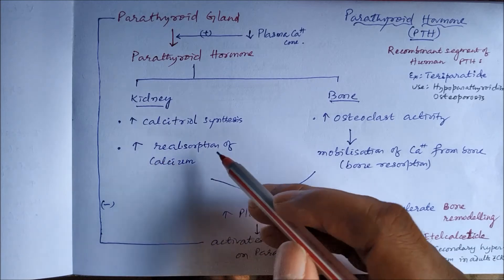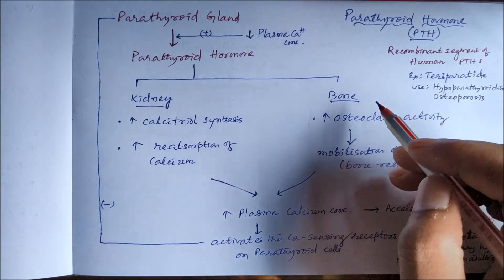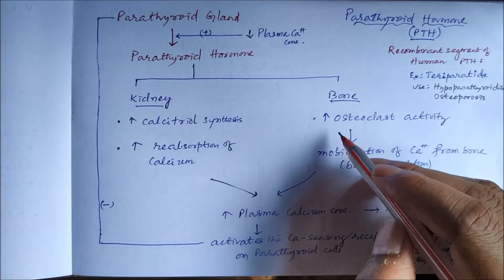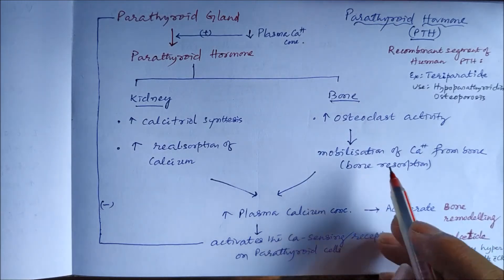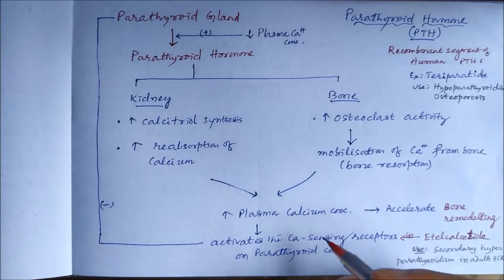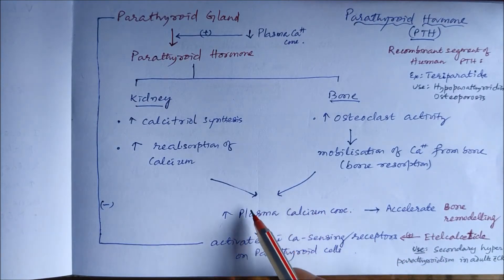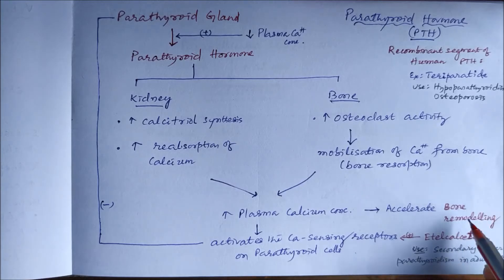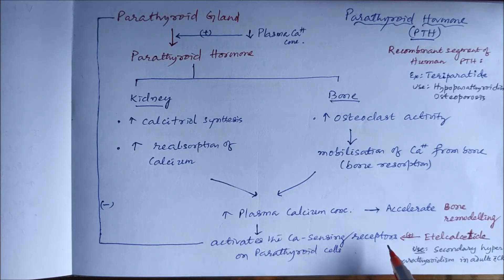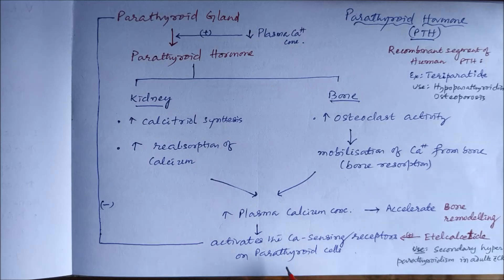In bone, parathyroid hormone, like vitamin D, increases osteoclast activity. This mobilizes calcium from bone, causing bone resorption and helping in bone remodeling. All of this leads to an increase in plasma calcium concentration. When calcium increases in plasma, it activates the calcium-sensing receptors on parathyroid cells.